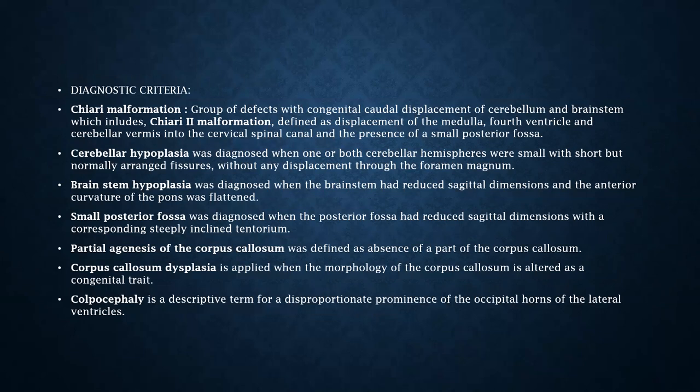The diagnostic criteria: Chiari type 2 malformation is defined as the displacement of the medulla, fourth ventricle, and cerebellar vermis into the cervical spinal canal with a small posterior fossa. Cerebellar hypoplasia was diagnosed when one or both cerebellar hemispheres were small with short but normally arranged fissures without displacement through the foramen magnum. Brainstem hypoplasia was diagnosed when the brainstem had reduced sagittal dimensions and the anterior curvature of the pons was flattened. Partial agenesis of the corpus callosum was defined as absence of a part of the corpus callosum, whereas corpus callosum dysplasia was applied when the morphology of the corpus callosum is altered. Colpocephaly was a descriptive term for the disproportionate prominence of the occipital horns of the lateral ventricle.